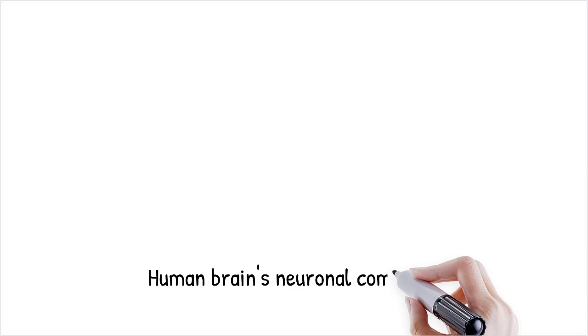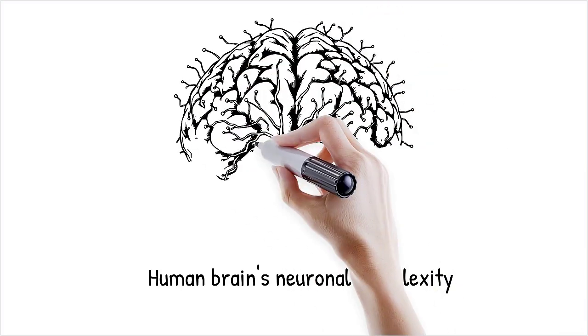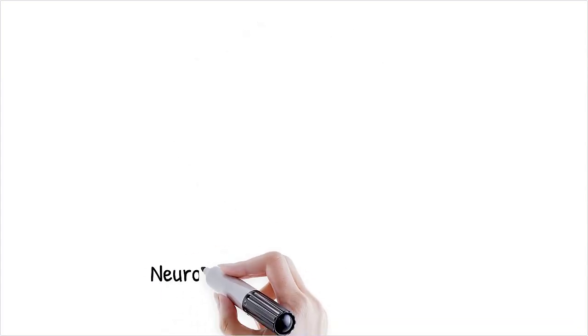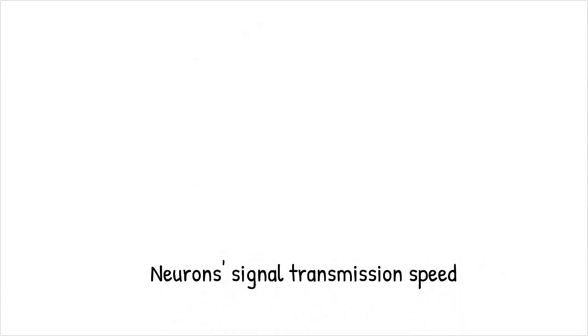The human brain contains 86 billion neurons connected by trillions of synapses, yet it operates under biological constraints that limit processing speed and memory capacity. Neurons transmit signals at a maximum speed of 120 meters per second, much slower than modern computer processors.